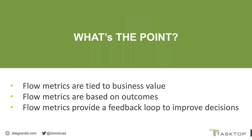Flow metrics bring visibility to outcomes — for example, only feature work got done last week, we didn't fix any technical debt, and that feature delivered last month was one week late for a big customer. Outcome-based metrics provide a feedback loop to improve decisions: should we allocate more capacity to fix tech debt next month, or continue allocating teams to do more features?